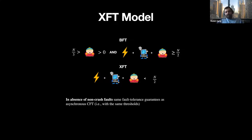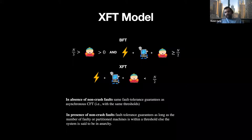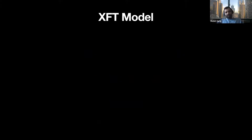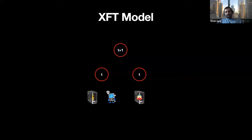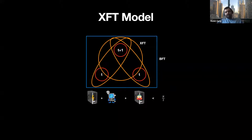More precisely, in the absence of non-crash faults, the XFT model provides the same guarantees as the CFT model. In the presence of non-crash faults, if the number of faulty or partitioned machines is within the threshold — that is, they are in the minority — then the system works fine. Otherwise, the system is said to be in NRT. I like to think of the XFT model as: we require T+1 correct machines to complete our protocol, unlike BFT which requires 2T+1.